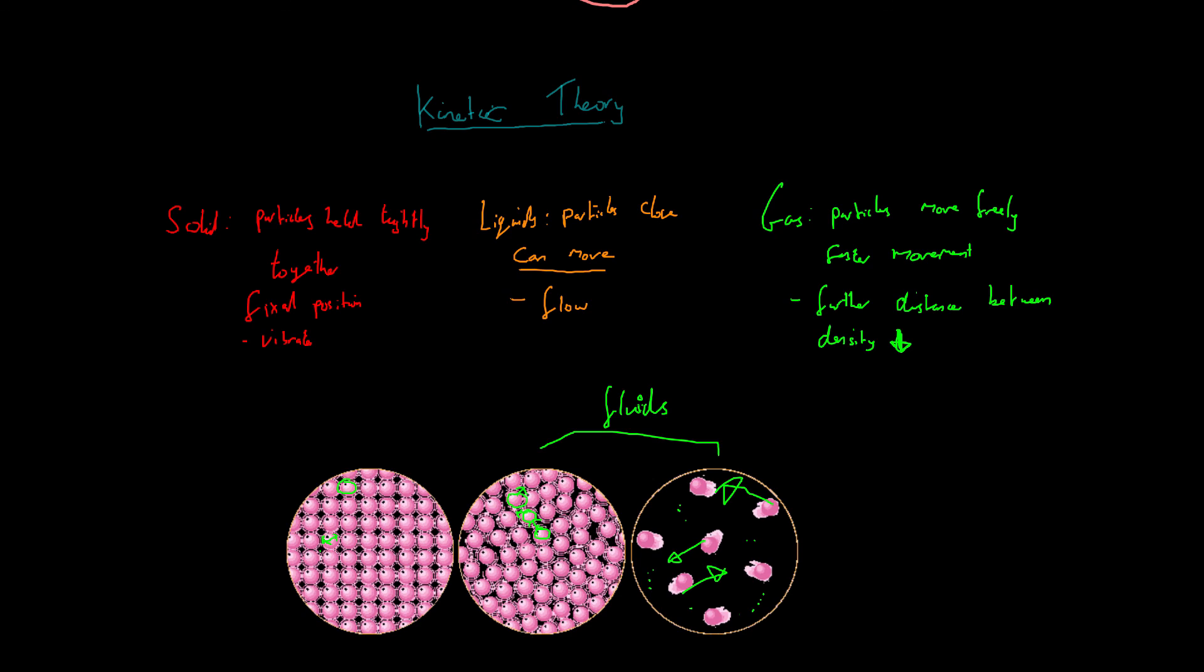Okay. Finally, because of all of this, the solids will have a completely fixed shape. And you know that because, for example, your mobile phone or a cube of ice, it doesn't really change shape unless you melt it. And so the fixed shape is because the particles can't move.